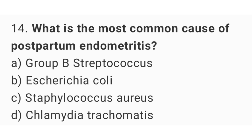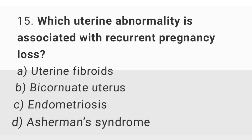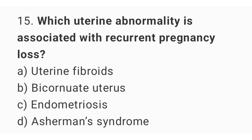Question number fifteen: which uterine abnormality is associated with recurrent pregnancy loss? The right answer is option B, bicornuate uterus.